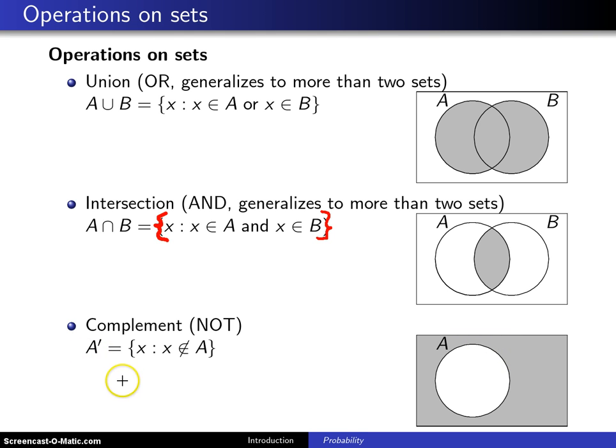This is not the only way to do complement. Some authors like to do A with a C up above there. Others like to do A with a bar up above it. A lot of different ways to do complement, but we'll use the prime notation here.